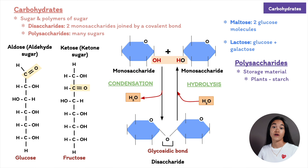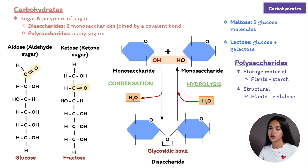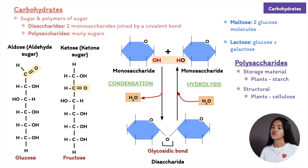Some polysaccharides serve as storage material — for example, plants store starch as granules within plastids, which can be broken down later as fuel when the plant requires energy. Other polysaccharides serve as building material to protect the cell — these are called structural polysaccharides. Examples include cellulose in plant cell walls, and chitin, which arthropods such as insects, spiders, and crustaceans use to build their exoskeletons, and which fungi use to build their cell walls. Chitin differs from cellulose in that it has a nitrogen group attached to the glucose monomer.